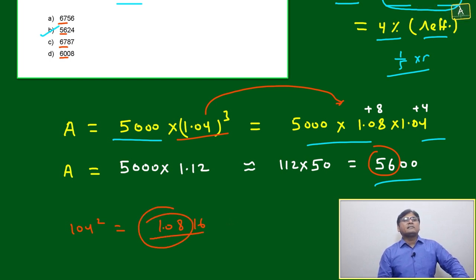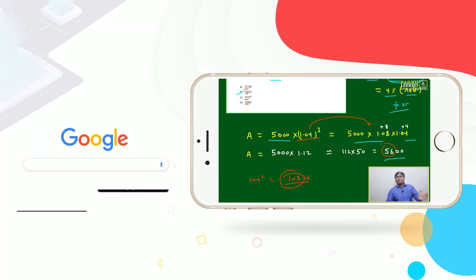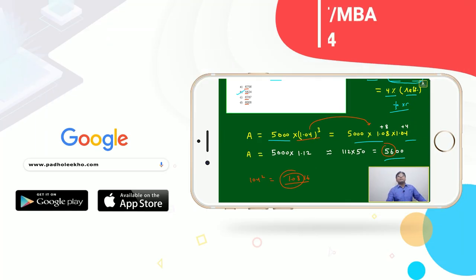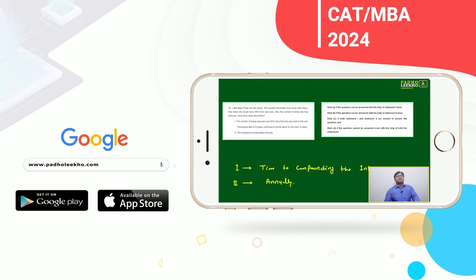1.08 × 1.04, again just apply the multiplication technique. This deviation is 8, this is 4. 8 × 4 is 32, that will be out because that will not make an effect. 108 + 4, it will become 112. And 5000 × 1.12, it will be coming around 5600.